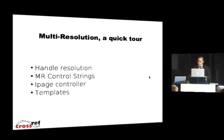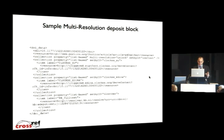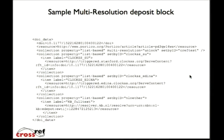That brings you to the IP controller, which does the reading of the control string from Handle and finding the interim page. Currently, the interim pages — we call them templates — have to be sent to us and have to be marked up with the labels that we're expecting to see. So you have to know what publishers are going to be coming in to this landing page to be able to resolve them with the appropriate information. And as we saw, this is essentially what the XML ends up looking like once you've unlocked the multi-resolution.